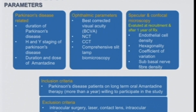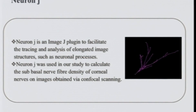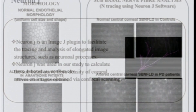Exclusion criteria included intraocular surgery, laser, contact lens use, intraocular pathology, and glaucoma. Ethical clearance was obtained and informed consent was taken from all participants. NeuronJ is an ImageJ plug-in to facilitate the tracing and analysis of elongated image structures like neuronal processes. NeuronJ was used in our study to calculate the subbasal nerve fiber density of corneal nerves on images obtained via confocal scanning.